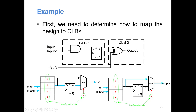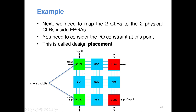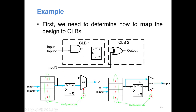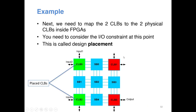Input 1, Input 2, Input 3, and the output are coming from the external world. I assume these two inputs come from the external world. The output of the first CLB goes as input to the second CLB, and the other input of the second CLB comes from the external world as Input 3. The final output goes to the external world through the pins.